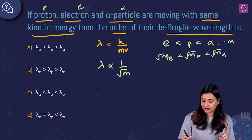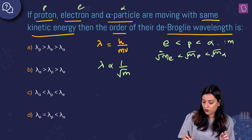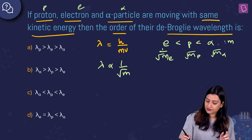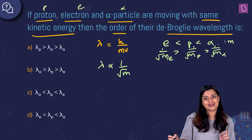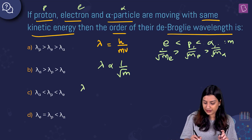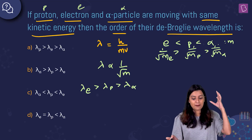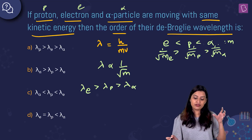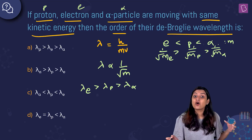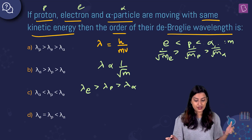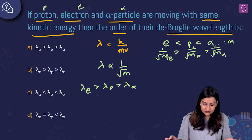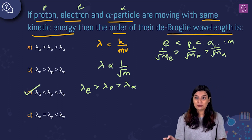Taking the inverse (since λ ∝ 1/√m), the wavelength order is the reverse: λ(electron) > λ(proton) > λ(alpha particle). The electron has the maximum de Broglie wavelength, followed by the proton, then the alpha particle. This order corresponds to option C, which is the correct answer.